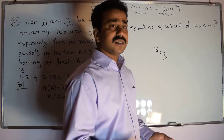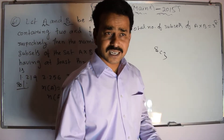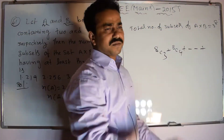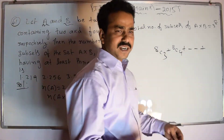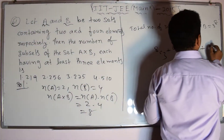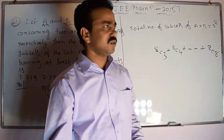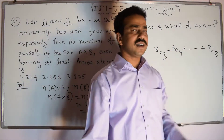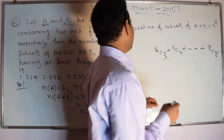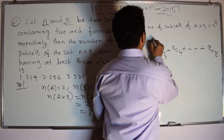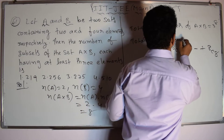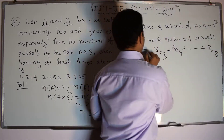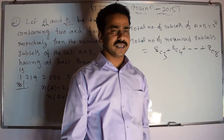Similarly, we also want subsets containing exactly 4 elements: 8C4 ways. This continues up to all 8 elements — the set A cross B itself is also a subset, which is 8C8 = 1. So the required number of subsets having at least 3 elements equals 8C3 + 8C4 + ... + 8C8.